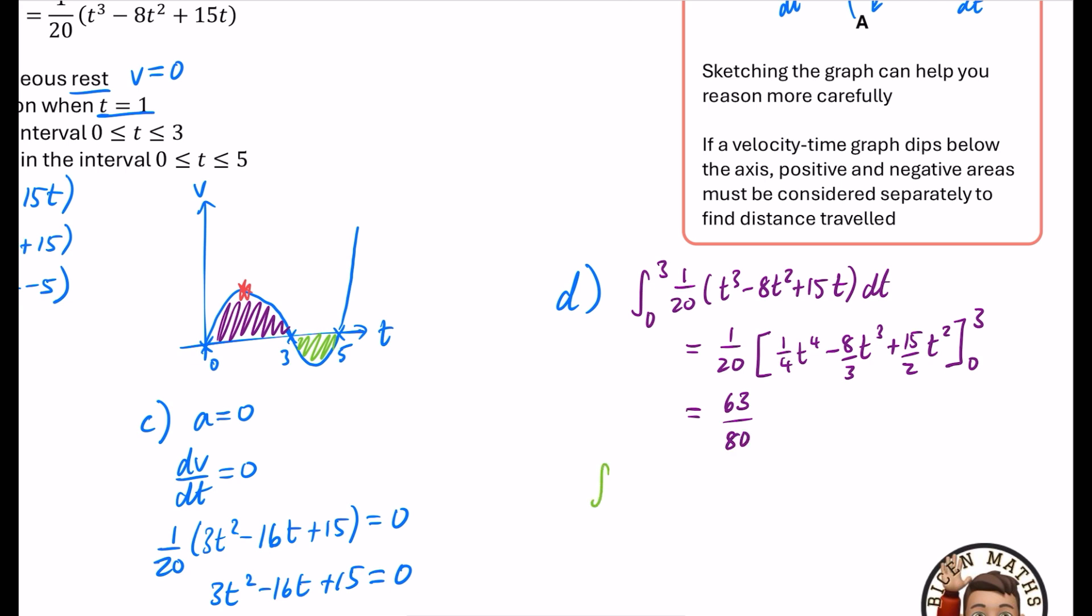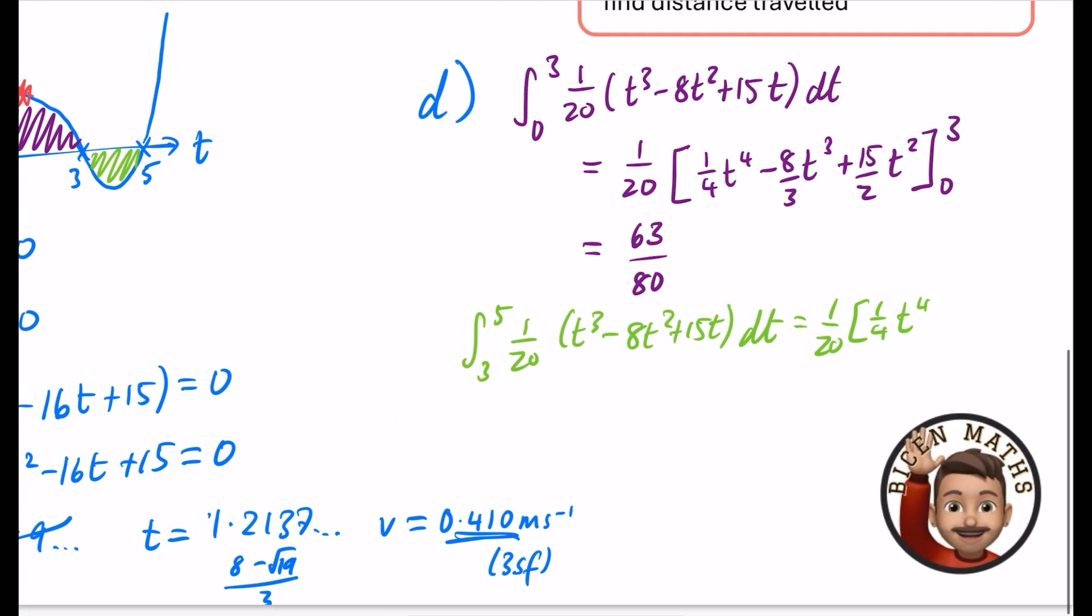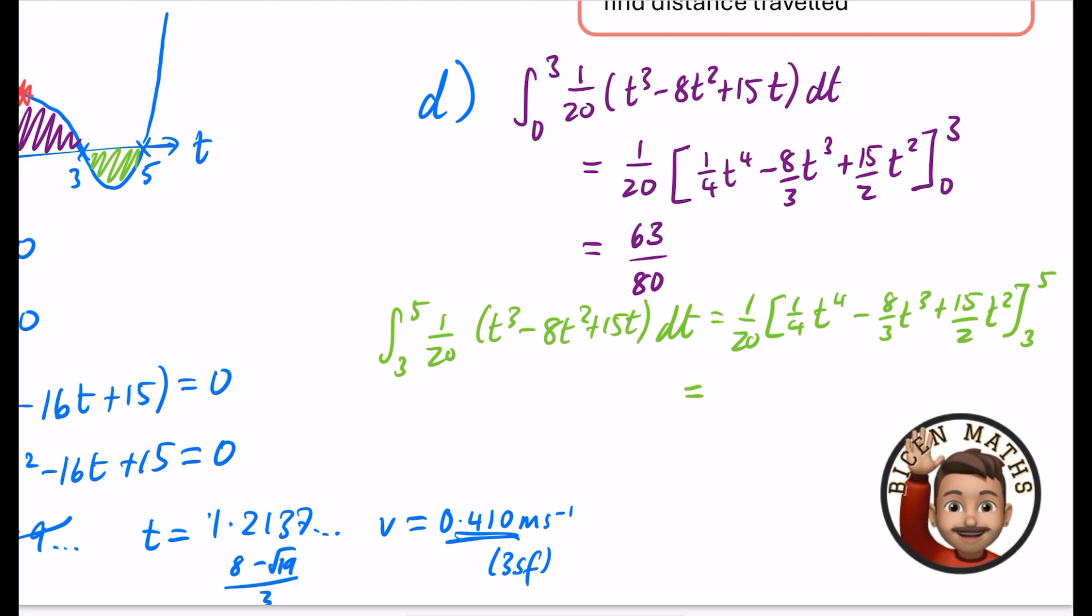The green part is between 3 and 5, and that's 1/20(t³ - 8t² + 15t) with respect to t. We know it's going to be the same integration as the previous one: 1/4 t⁴ - 8/3 t³ + 15/2 t². The limits this time are between 3 and 5. We should expect that answer is going to be negative because it is below the axis. I'm going to change the limits on my calculator. What's that between 3 and 5? And it is negative. It's -4/15.